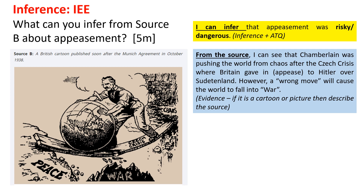From the source, I can see that Chamberlain was pushing the world from chaos — you can see the chaos here. After the Czech crisis where Britain gave in to Hitler, there was a sense of peace. However, from this picture, it was perhaps a wrong move because if Chamberlain did not push the world properly, instead of bringing it to peace, it could actually lead it to war. The blue colour box is evidence — it is a cartoon, so in the exams you must describe the source, you need to describe what you see.